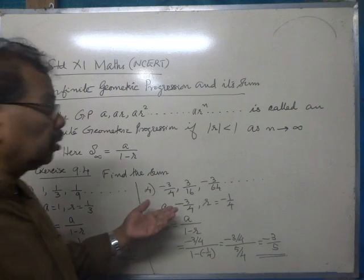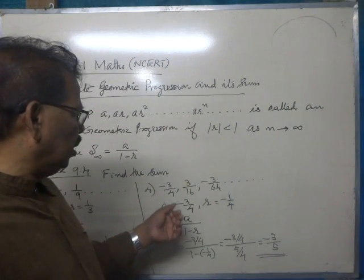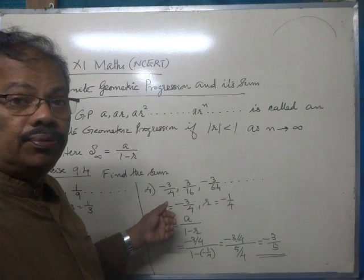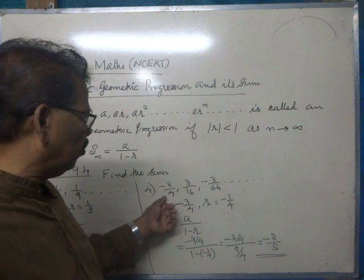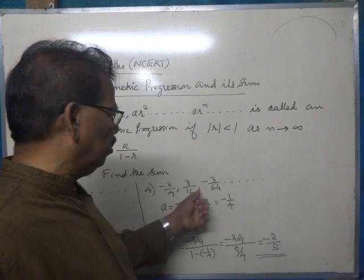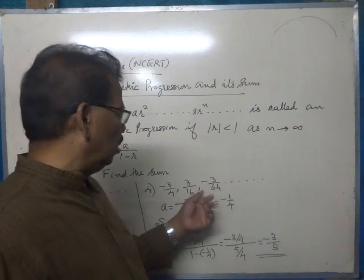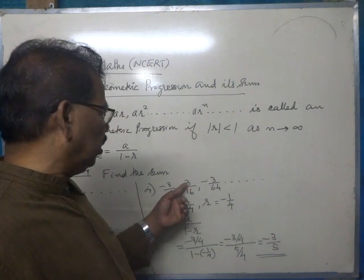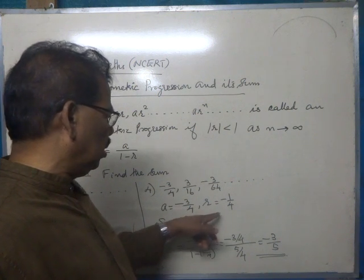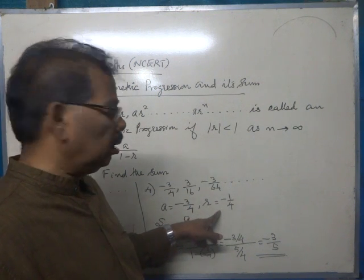Now we consider question number 4 in that exercise. The series has first term -3/4, second term 3/16, and third term -3/64. Dividing 3/16 by -3/4, we get the common ratio as -1/4.